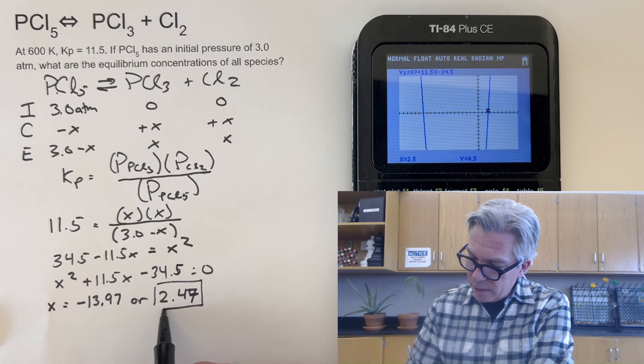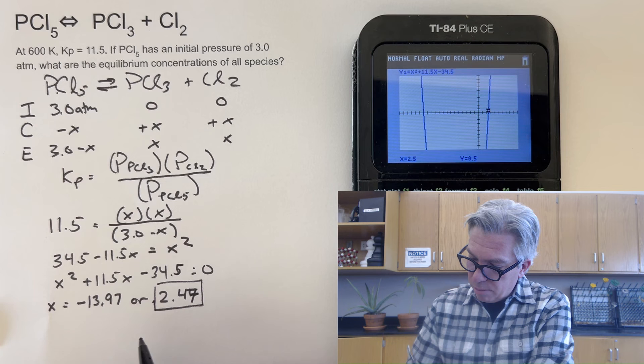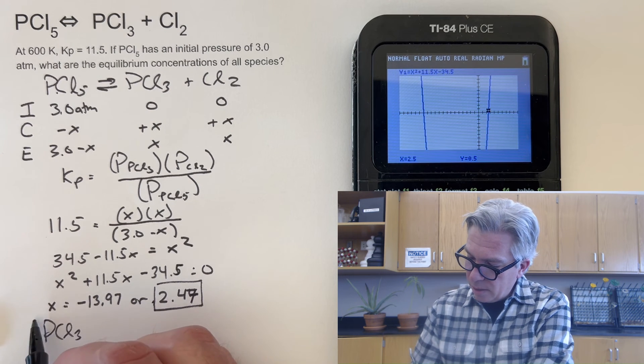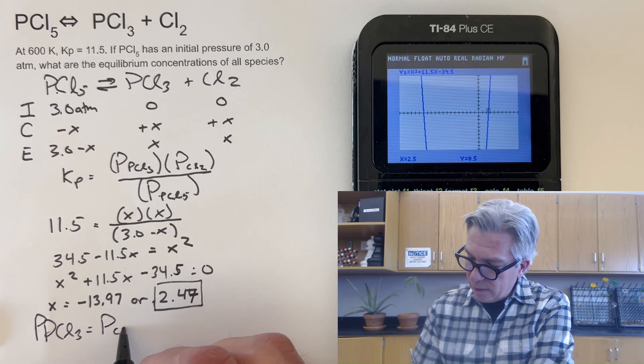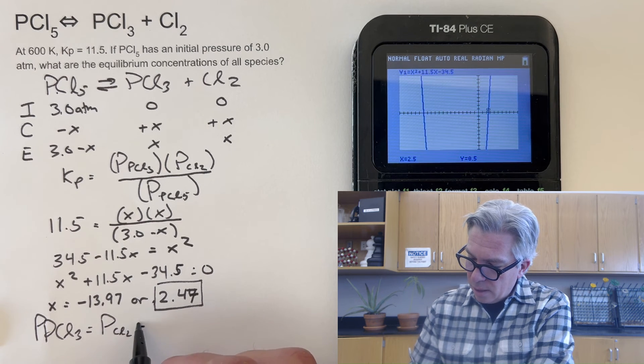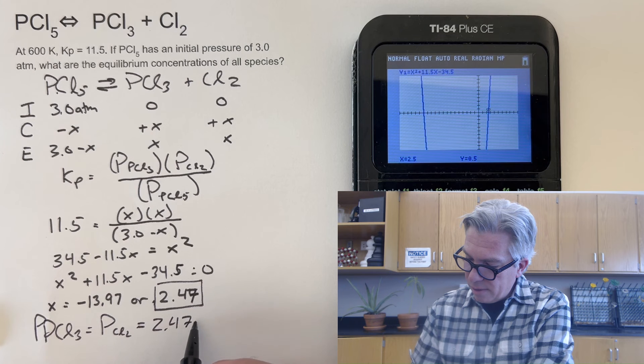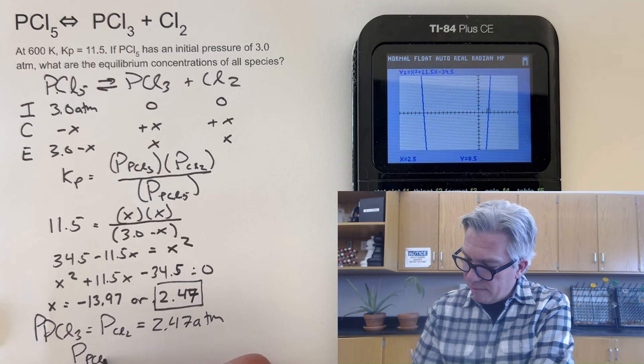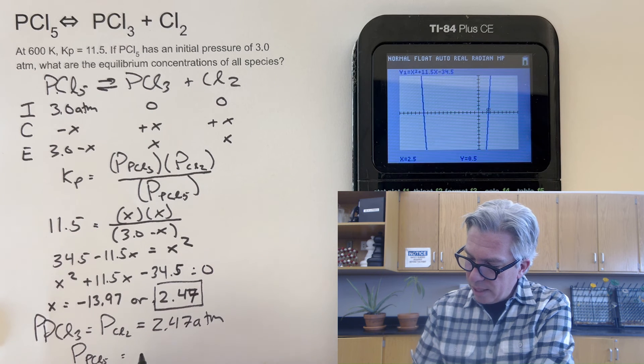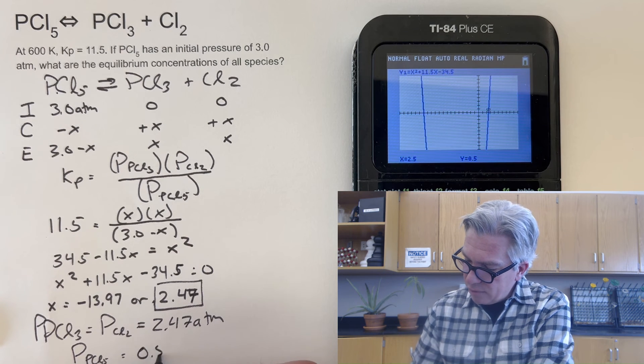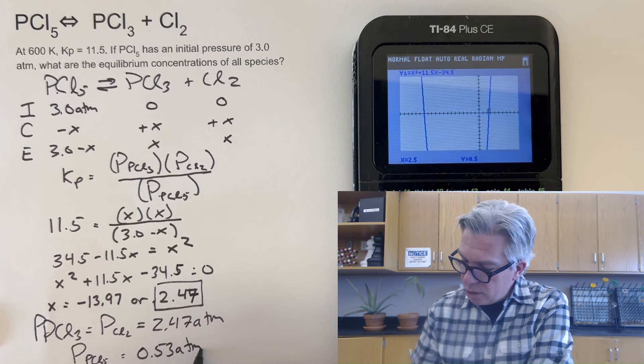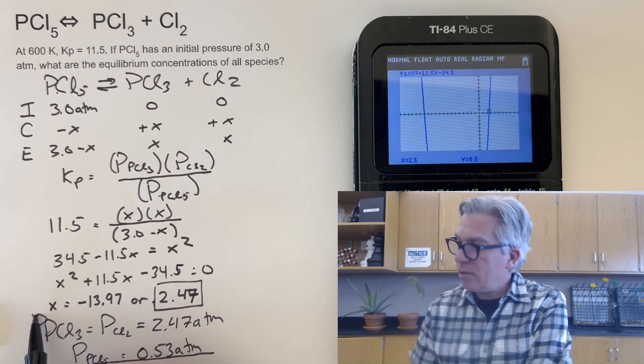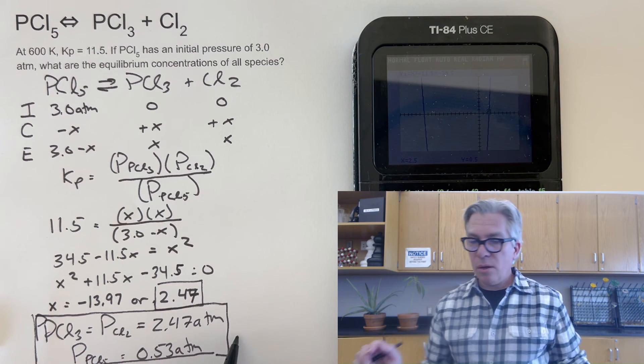So therefore, PCL3, the pressure of PCL3 equals the pressure of CL2, which is equal to 2.47 atmospheres. And the pressure of my PCL5 is going to be three minus that or 0.53 atmospheres. So again, take a moment at the end after you've solved for x and make sure you answer the question because you did a lot of work for that and you want to make sure you get credit for everything that you have done.